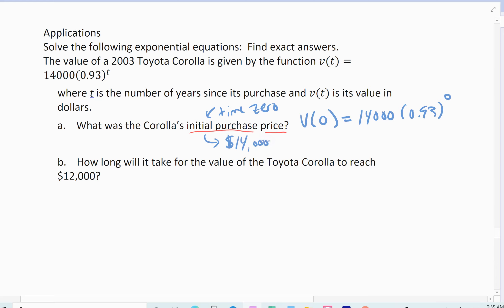How long will it take for the value of the Toyota Corolla to reach $12,000? So how long will it take it to drop by $2,000? And so how long means we want the time. Well, the time is in the exponent. We want to know when the value will equal that $12,000. And so I've got to take this equation, set it equal to $12,000, and solve for time.